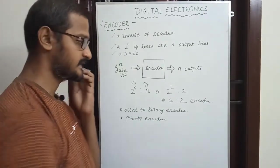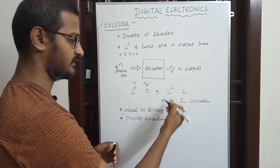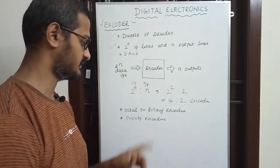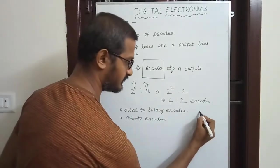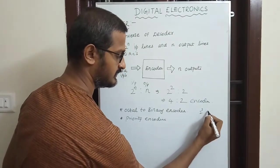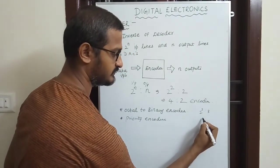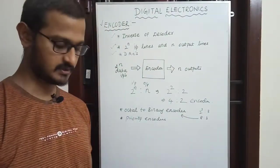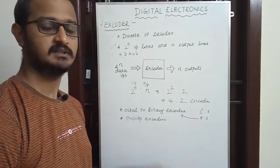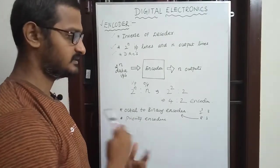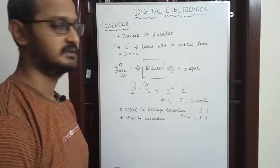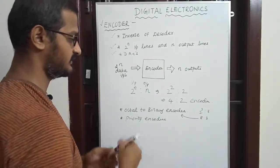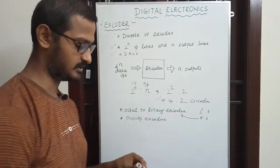So the types are: a 4-to-2 encoder, and an 8-to-3 encoder which is the octal to binary encoder. In general, encoders have 2^N inputs and N outputs. If you reverse it — N inputs to 2^N outputs — that gives you decoders.